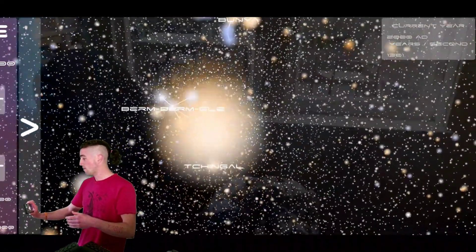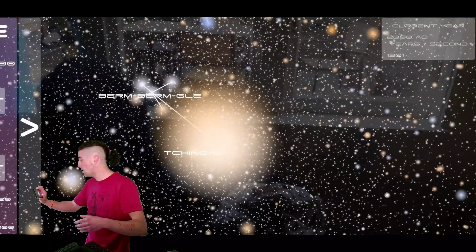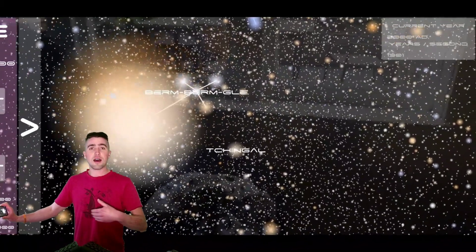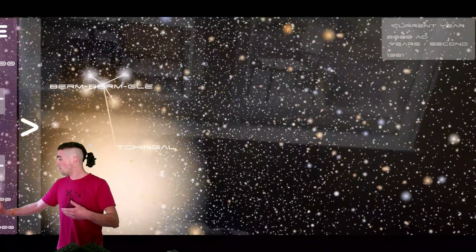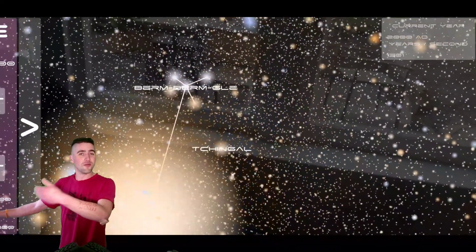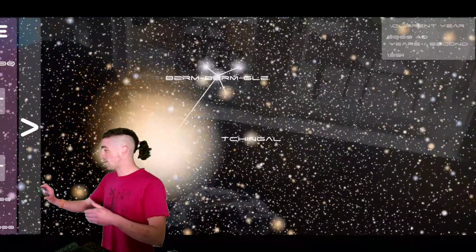For example, right here we have the Berm Berm Glare constellation system. And right here is the Alpha Centauri system. And we can see how close it is and what this constellation looks like from a star inside it and that sort of thing. And there's really awesome stuff we can do.